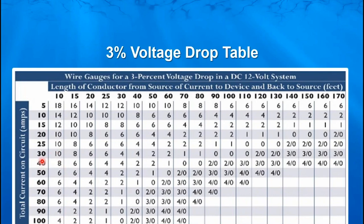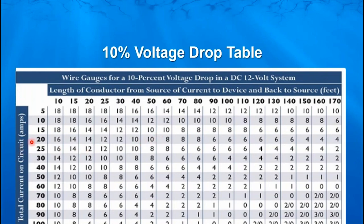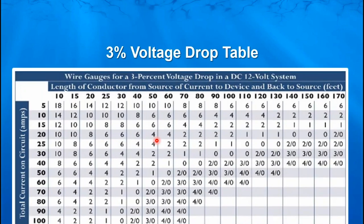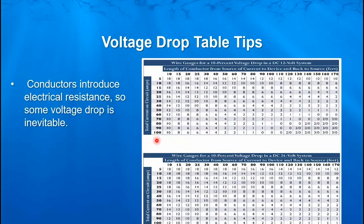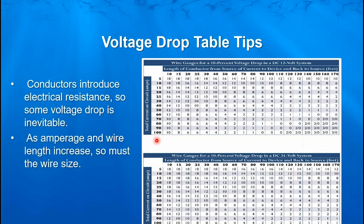On our 3% table, for 20 amps on a 50-foot circuit — that's 25 feet out and 25 feet back — we've got to use a piece of number 4 cable. That's a fairly substantial piece of cable. Compared to our 10% volt drop table, for 20 amps at 50 feet, we only need a piece of number 10. So there is quite a sizable difference in wiring between 3% and 10%. Conductors introduce electrical resistance and some voltage drop is inevitable — we can't have zero voltage drop, but 3% is pretty close. The general rule is: as amperage and wire length increase, so must the wire size.